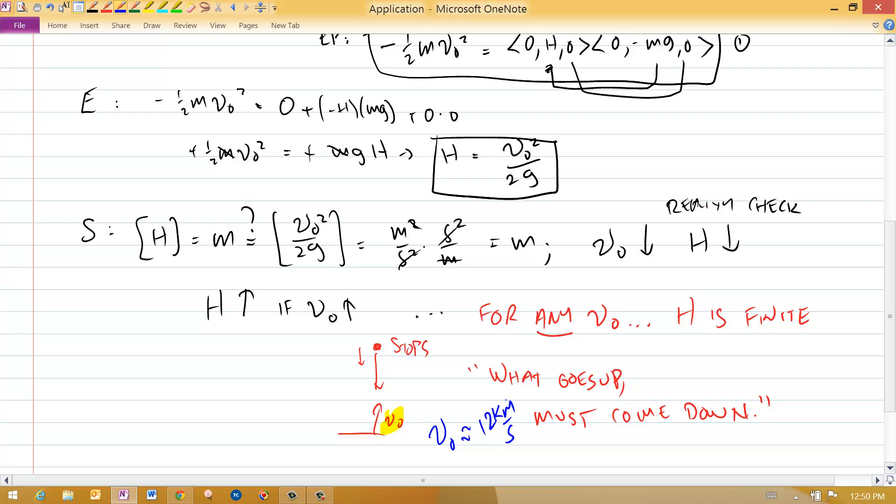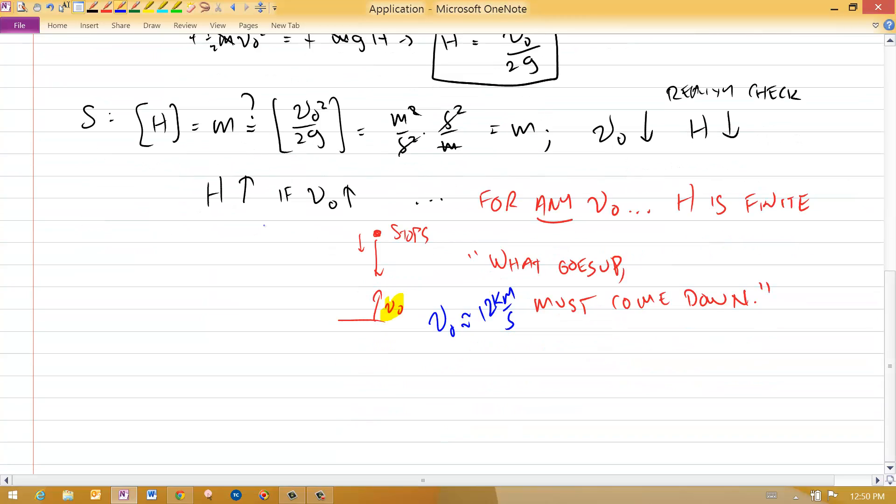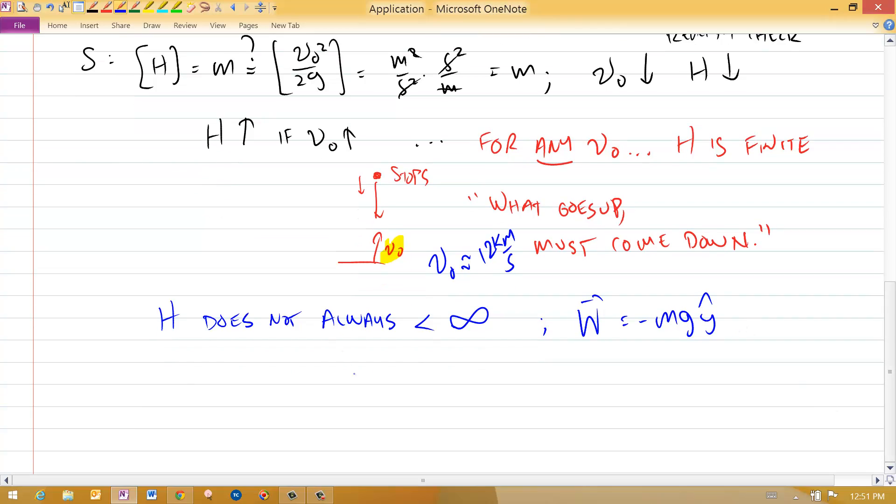And satellites do not come back down to the earth. So there is something wrong with this expression. H does not always be finite. And so there is some problem here. And the problem is that we're using the weight force is equal to minus mg y hat. Which is fine if you're just going to stay near the surface of the earth.